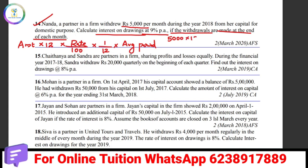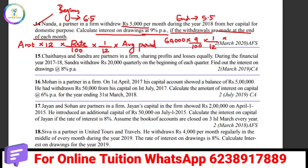Amount is Rs. 5,000, so 5,000 × 12 = 60,000. Then × 9/100 × 1/12 × average period. The average period at the beginning is 6.5, at the end is 5.5, and in the middle is 6. So 60,000 × 9/100 × 1/12 × 5.5 = Rs. 2,475. That is the interest on drawings.